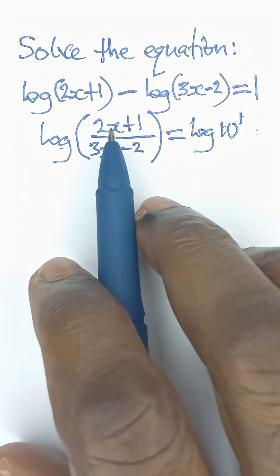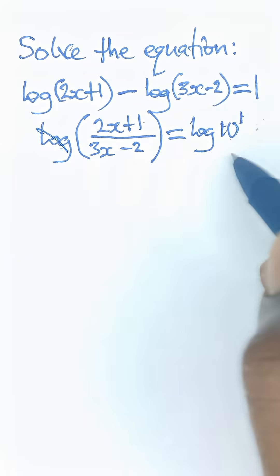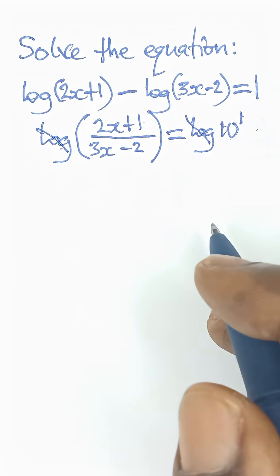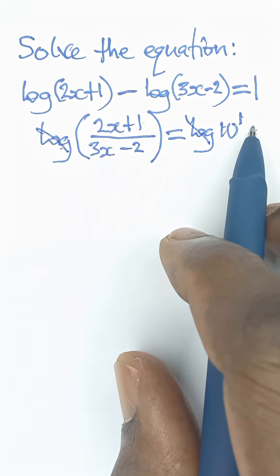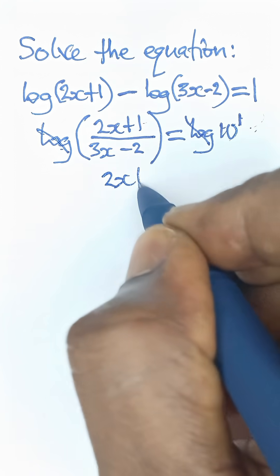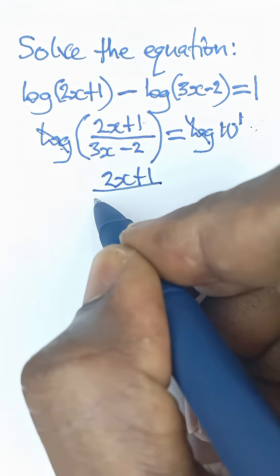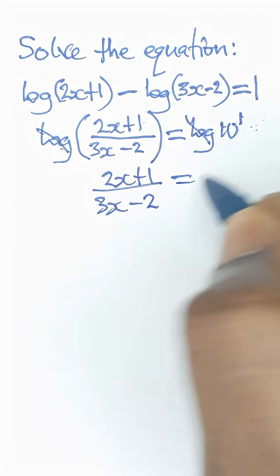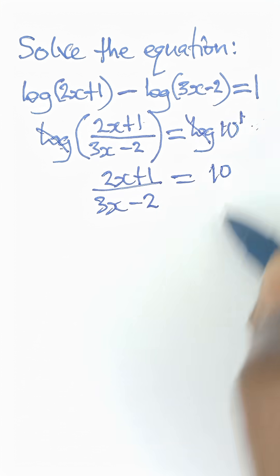And so now that we have done that, we can now ignore the log part of the equation and simply equate the values that we have there. So it becomes 2x plus 1 all over 3x minus 2 is equal to 10 raised to the power 1, which is 10.